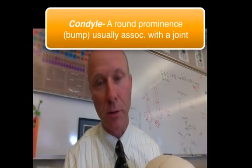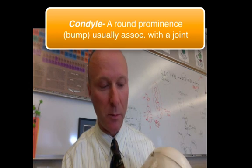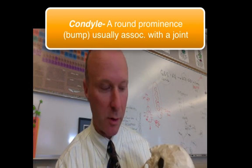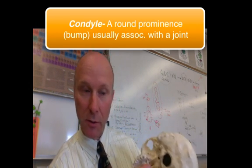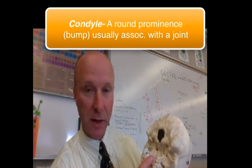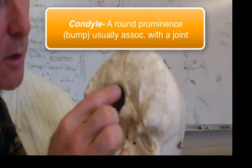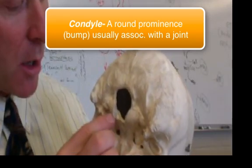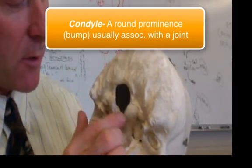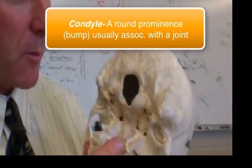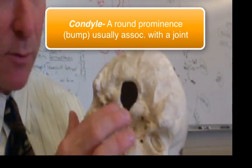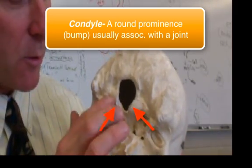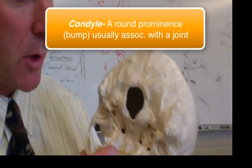A condyle is a round prominence or bump on bone, usually for articulation with another bone. Here, if we look under the skull on the inferior surface, around this hole — the foramen magnum — on either side you'll see two condyles, two rounded bumps, and they're kind of smooth in appearance. On a real skull, this would be covered with articular cartilage.